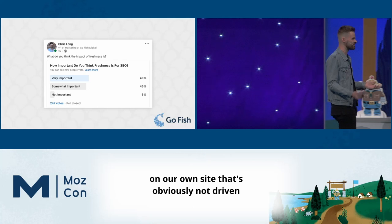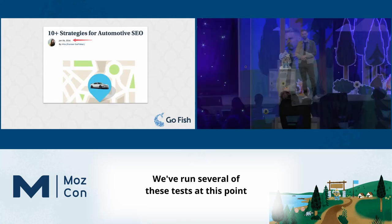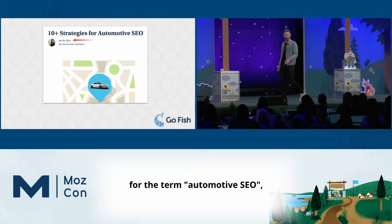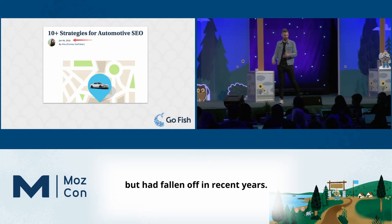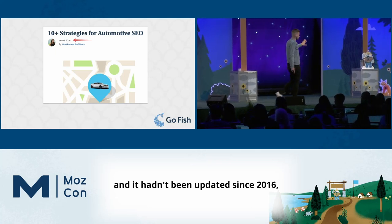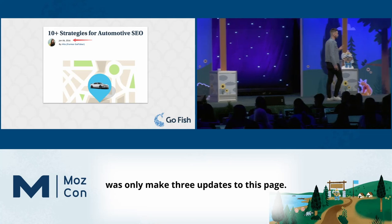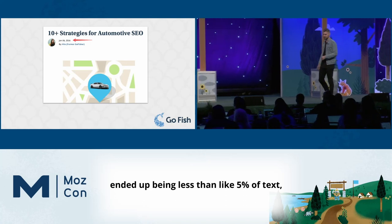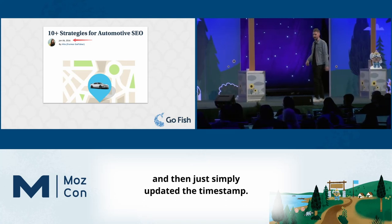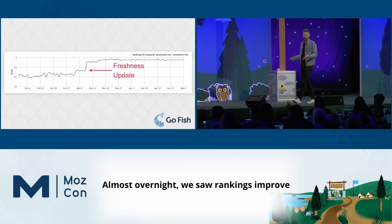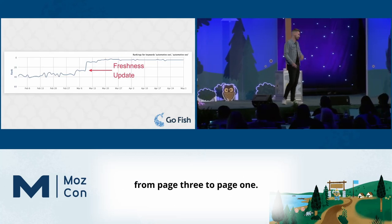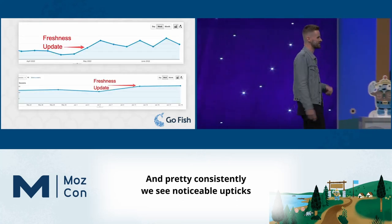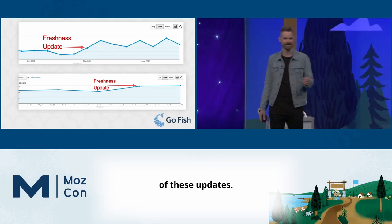We've run several of these tests, but this is the most prominent one. We had a page that used to rank really well for 'automotive SEO' but had fallen off in recent years — it hadn't been updated since 2016. We made only three updates: we updated the content to make sure it was current (less than 5% of text changed), added the year to the title tag, and simply updated the timestamp. Almost overnight we saw rankings improve from page three to page one.